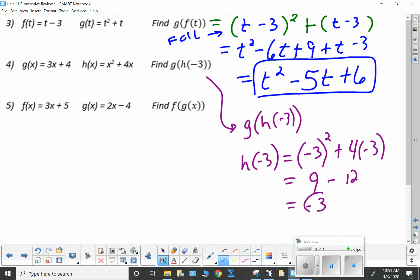And I'm going to have negative 3 quantity squared is 9 minus 12 is negative 3. Now, negative 3 is h of negative 3. So, I can do g of negative 3. And it's just coincidental. It came out that way.